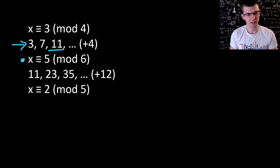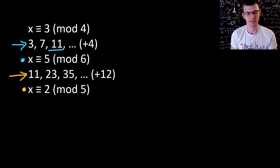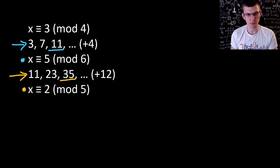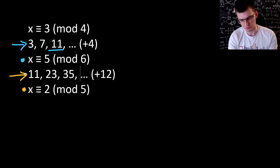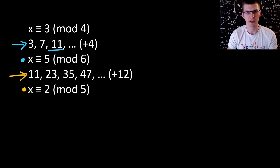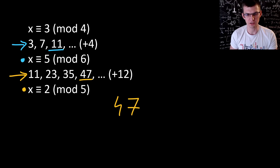Then we look at this sequence of solutions for the first two congruences and find the first value satisfying the last congruence. 11 modulo 5 is 1, 23 modulo 5 is 3, 35 is 0 modulo 5. Apparently I need some bigger value. After 35 plus 12, that's 47. And 47 modulo 5 is 2 indeed. So it is the smallest solution for our system of three congruences.